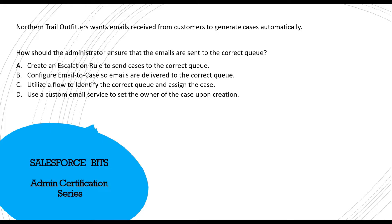The first question says: Northern Trail Outfitters wants emails received from customers to generate cases automatically. How should the administrator ensure that emails are sent to the correct queue? There are two parts: first, create cases from customer emails, and second, ensure emails are sent to the correct queue.